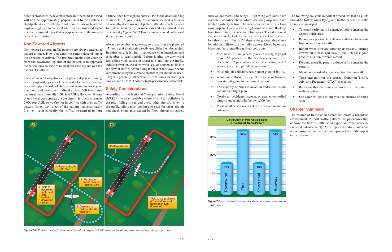Before joining the downwind leg, adjust your course or speed to blend into the traffic and avoid flying too fast or too slow. Speeds recommended by the airplane manufacturer should be used, generally falling between 70 to 80 knots for fixed-gear singles, and 80 to 90 knots for high-performance retractables. According to the National Transportation Safety Board (NTSB), the most probable cause of mid-air collisions is the pilot failing to see and avoid other aircraft.